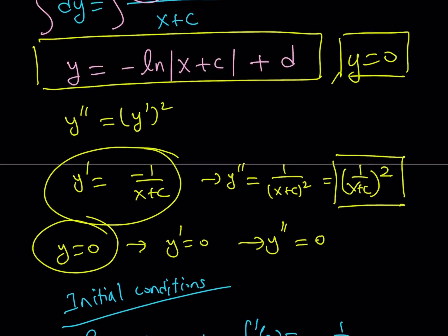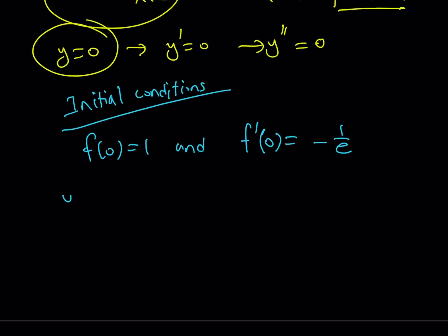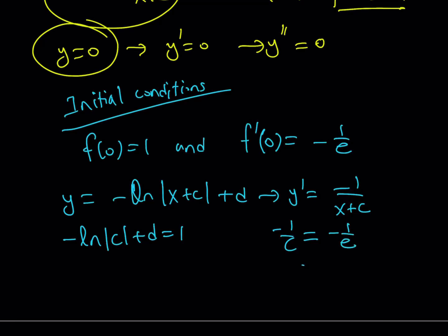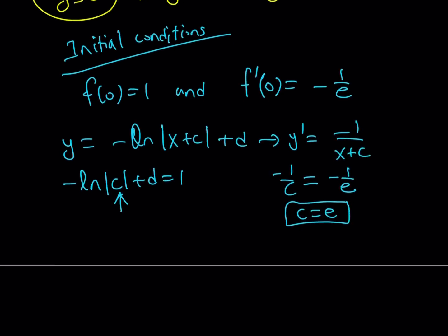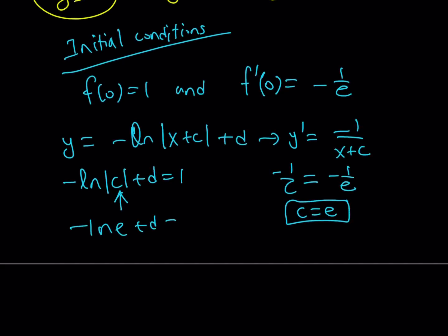Well, f of 0 equals 1 basically means that you can just plug in, let's go ahead and write this down first. This is our solution, one of the solutions. Of course, I'm not talking about 0 here, by the way, because if y is 0, then it's going to be always 0 for any x value. So this is not going to work with y equals 0. But for the other solution for which y does not equal 0, you can just plug in x equals 0, you're going to get negative ln c plus d is equal to 1. And then from the second equation, the derivative of this one, remember, was negative 1 over x plus c. And if you replace x with 0, you will get negative 1 over c equals negative 1 over e. From here, you're going to get c equals e, and if you plug in c equals e here, you're going to get negative ln e plus d equals 1 or d equals 2.